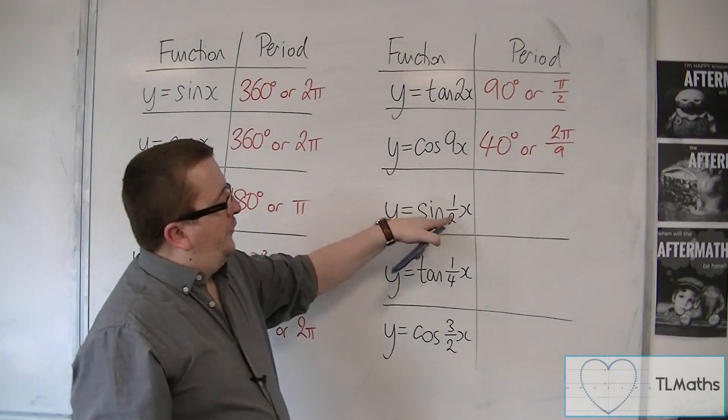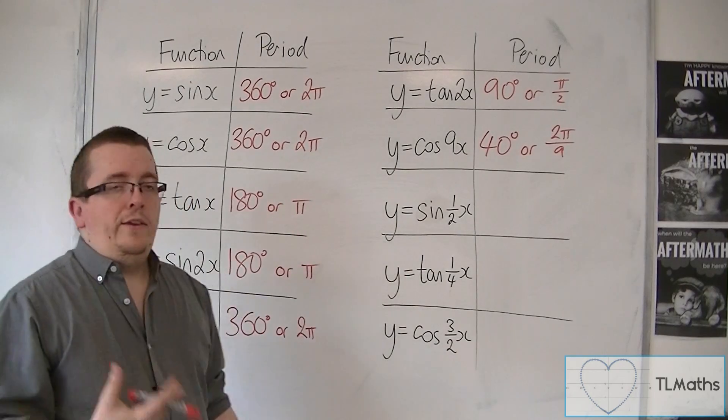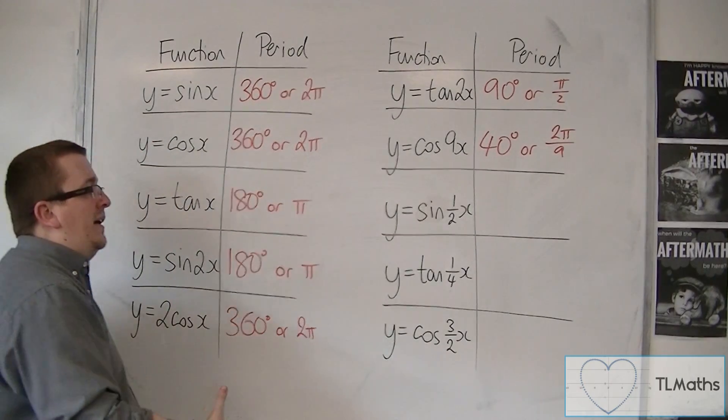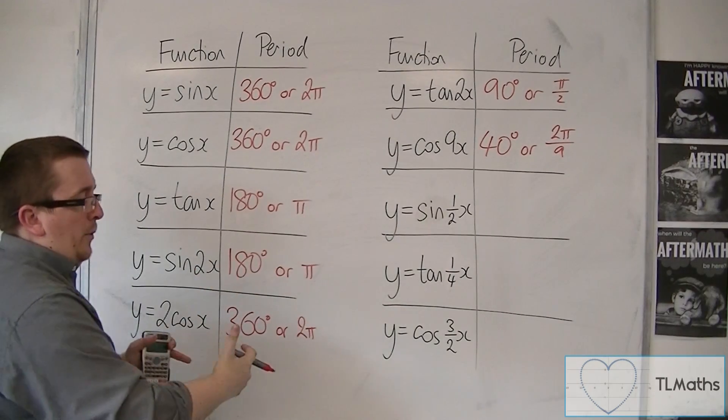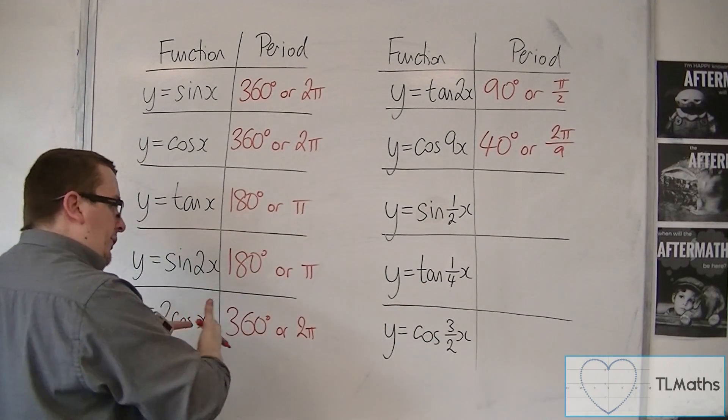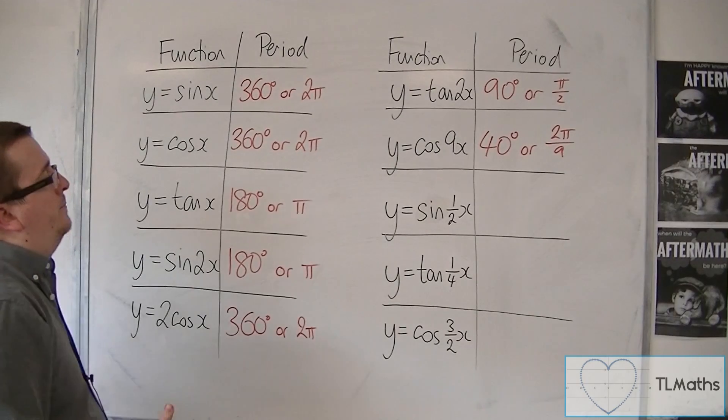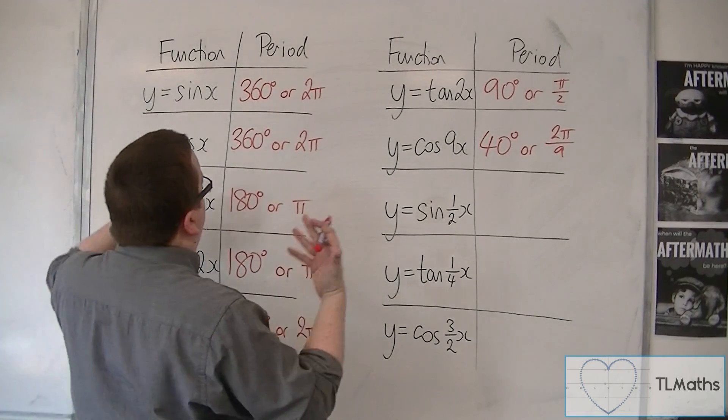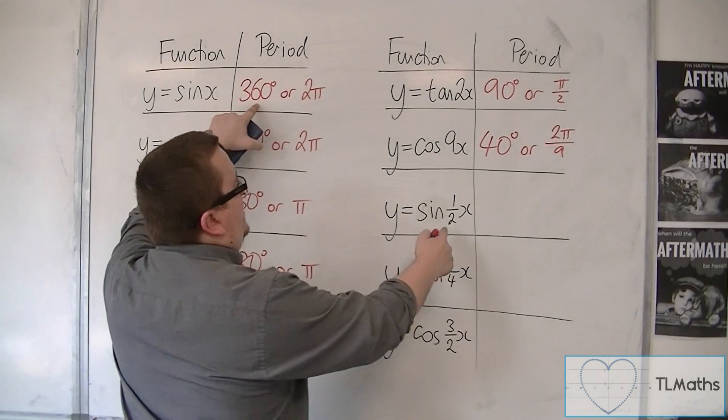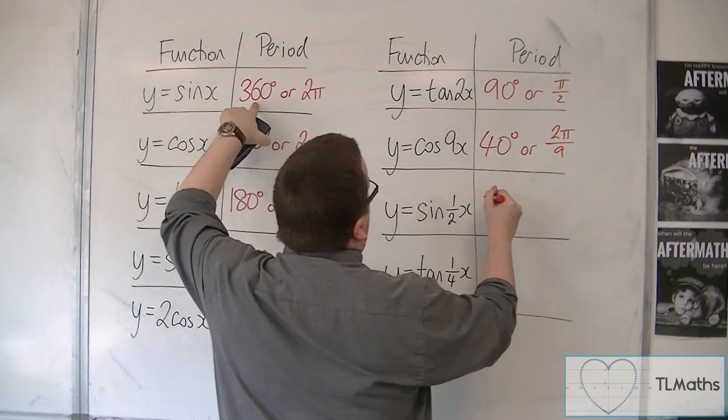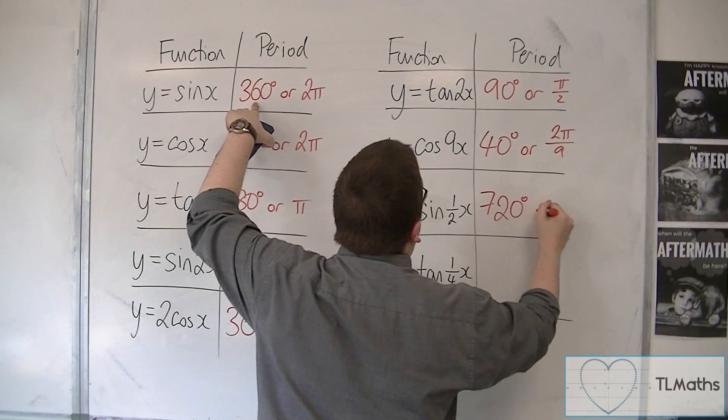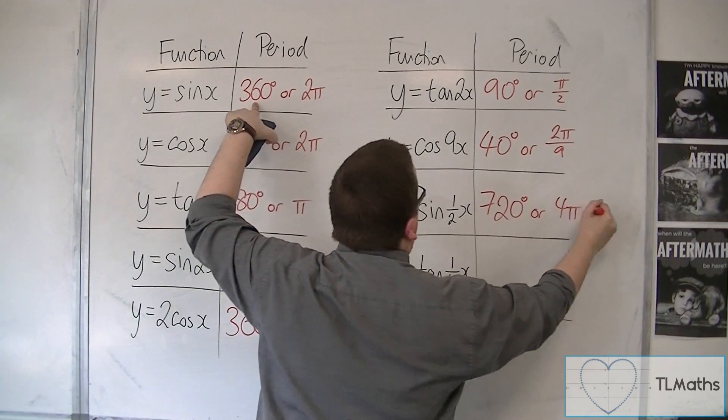Now for sine of a half x, that's a stretch parallel to the x-axis, a factor of 2. And so that actually doubles the period, because it stretches the curve out. And so you're doing 360 divided by a half, which is the same as multiplying by 2. So that's 720 degrees or 4 pi radians.